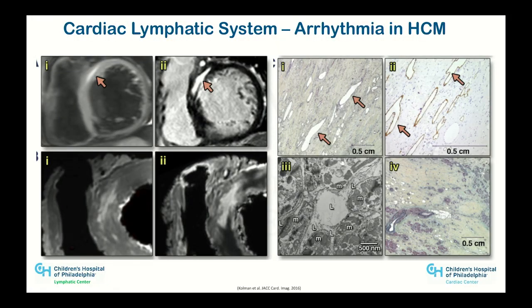This is an article just out in JACC — a single case report of an adult heart failure patient with intractable ventricular tachycardia. T2 imaging showed a bright region corresponding to scarring, and the patient ultimately needed a heart transplant. That region on imaging corresponded to large lymphatic channels, suggesting something was wrong in that area of the heart, leading to those very bad arrhythmias.